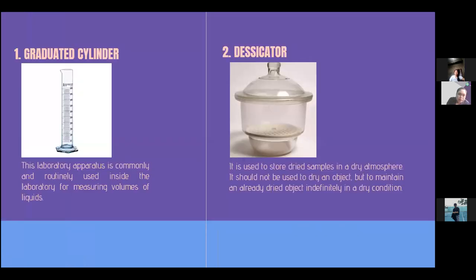For the first apparatus, the graduated cylinder. This laboratory apparatus is commonly and routinely used inside the laboratory for measuring volumes of liquids. The second one is the desiccator. Desiccator is used to store dried samples in a dry atmosphere. It should not be used to dry an object, but to maintain an already dried object definitely in a dry condition. Desiccator is also used in preserving moisture sensitive items such as cobalt chloride paper.